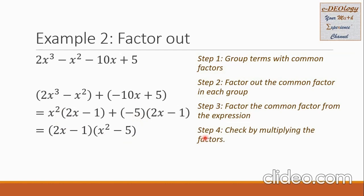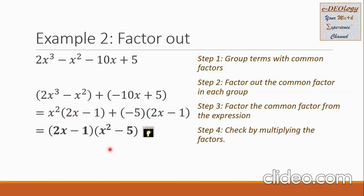Step 4: check by multiplying the factors. So 2x times x squared gives 2x cubed. 2x times negative 5 gives negative 10x. Then negative 1 times x squared is negative x squared. Negative 1 times negative 5 is positive 5. So we are sure that our answer is correct.